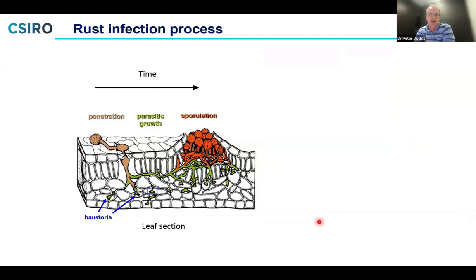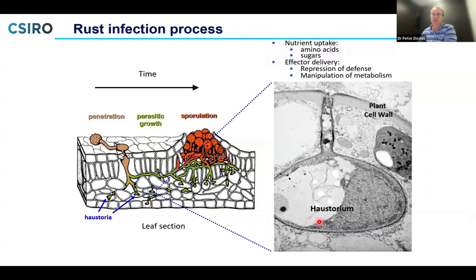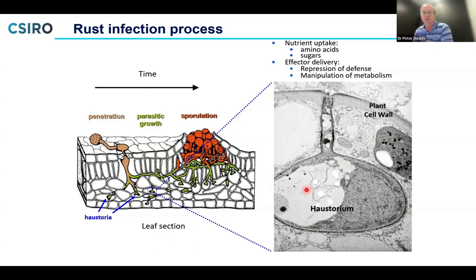Focusing on the haustorium structure — this is an electron micrograph of a haustorium inside a plant cell. You can see the plant cell wall along the outside; this structure grows through the wall and into the cell. It's the main source of nutrient uptake for the pathogen, absorbing sugars and amino acids from the host cells to power its growth. It's also the site at which the pathogen delivers proteins into the host cell to support infection — manipulating the host cell.